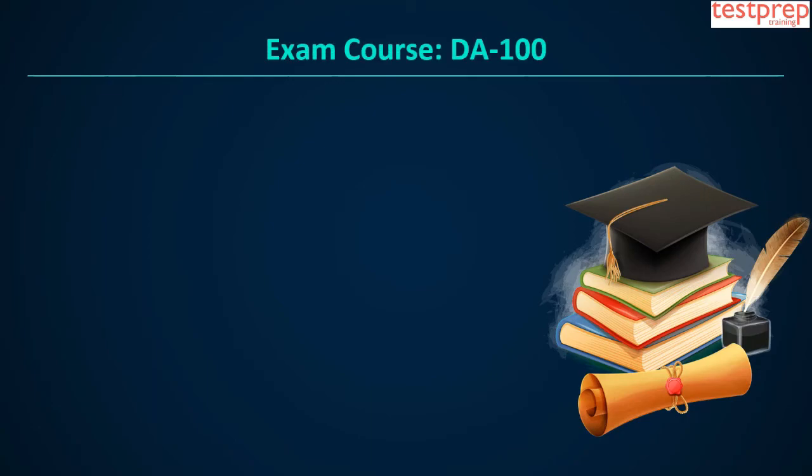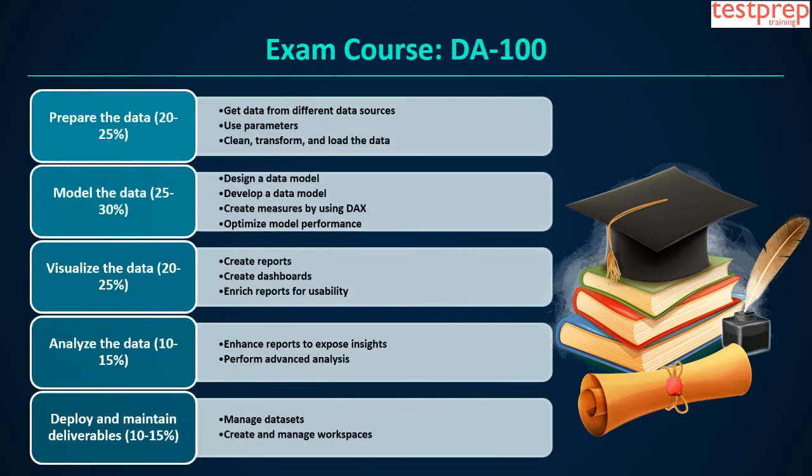Now let's discuss about the course outline. Domain 1: Prepare the data, which comprises 20–25% weightage in the exam. This includes: 1. Get data from different data sources. 2. Use parameters. 3. Clean, transform, and load the data.